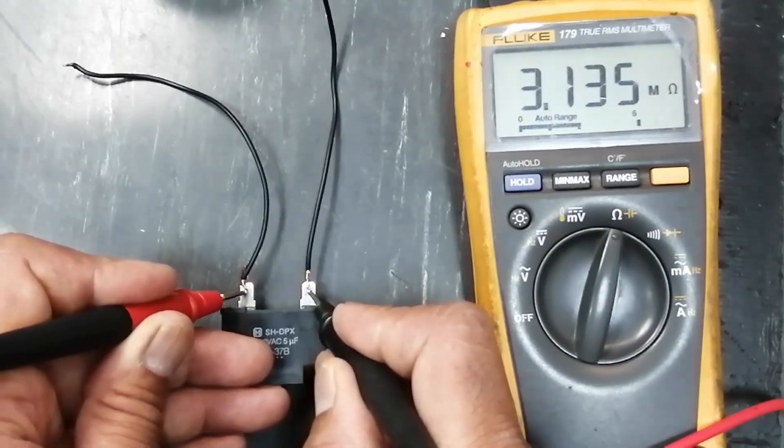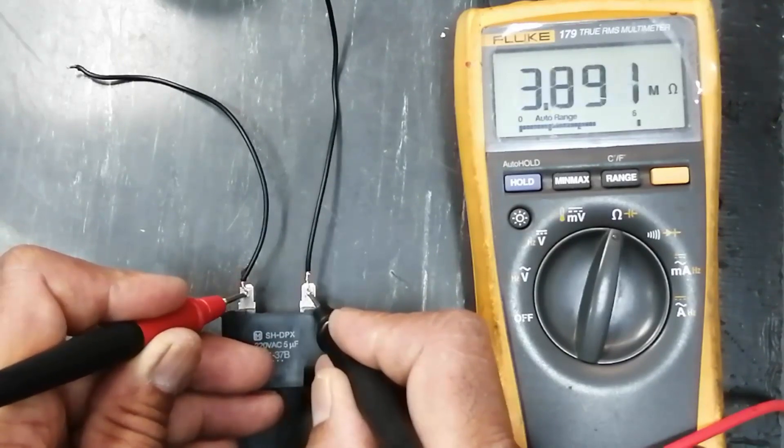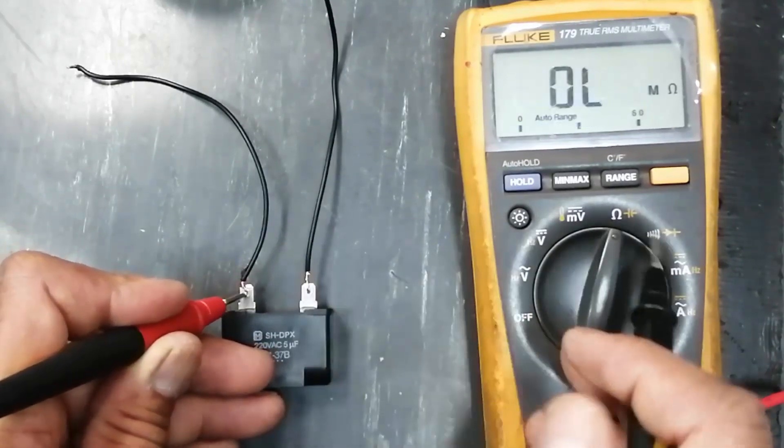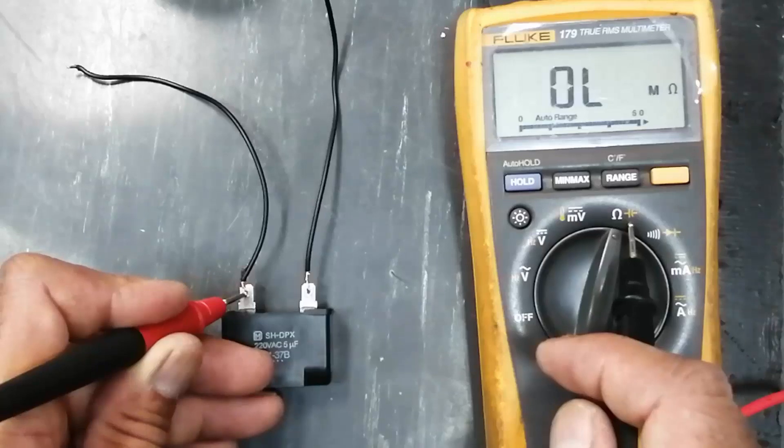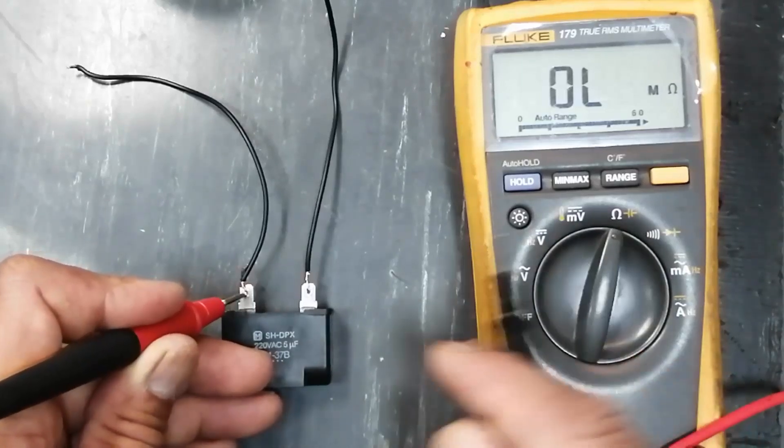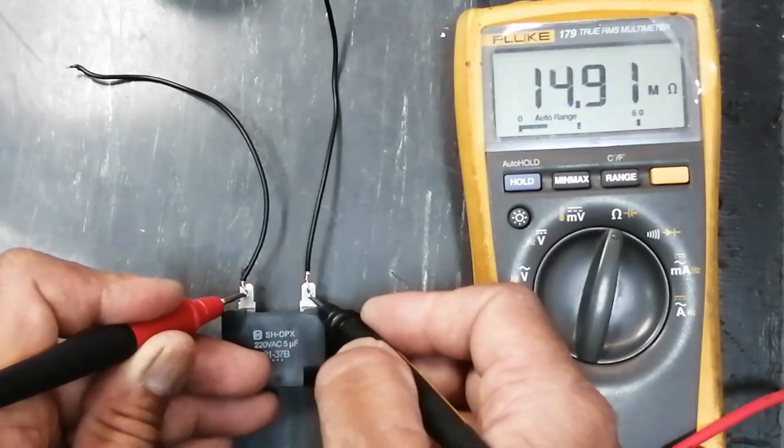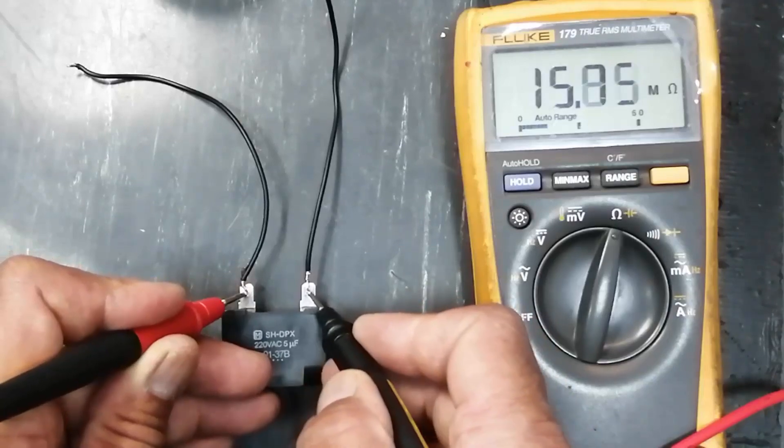Now the resistance is increasing in mega-ohms, so that means the capacitor is healthy. If your multimeter does not have the capacitor function, or you don't have an LCR meter or capacitance meter, then you can test the capacitor in these ways.